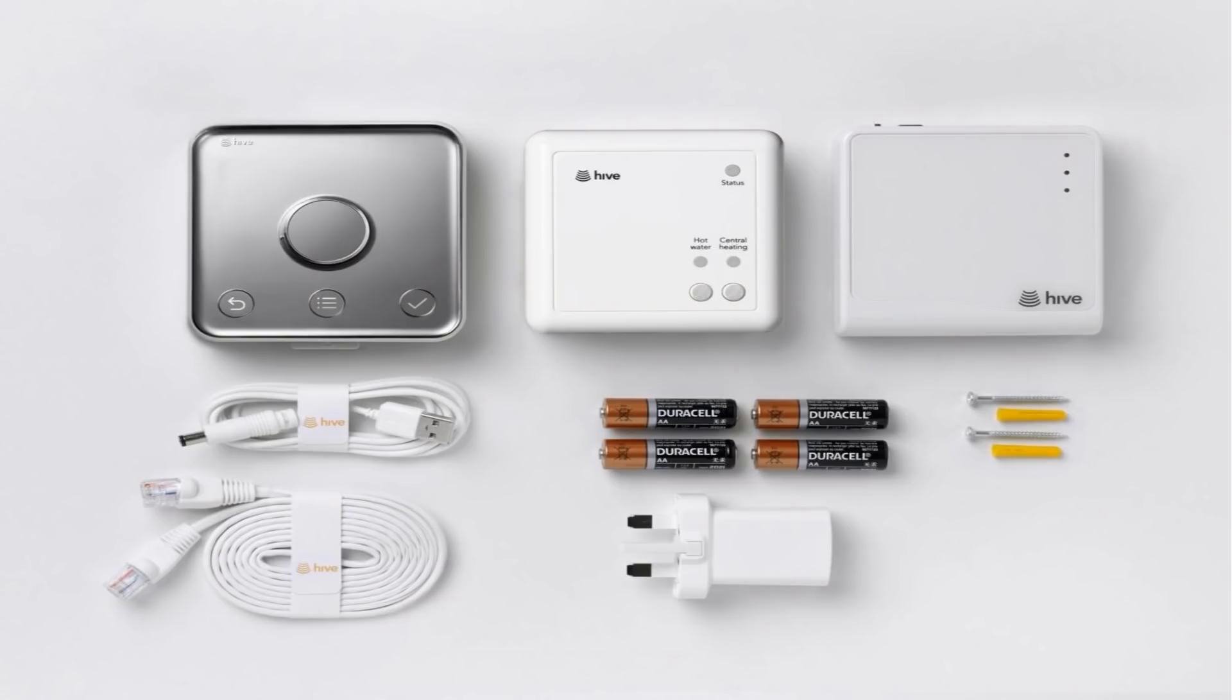This is what you get in the box. You get the thermostat, the receiver, the hub, some batteries, some fixings, a power supply, an ethernet cable, and a USB power cable.